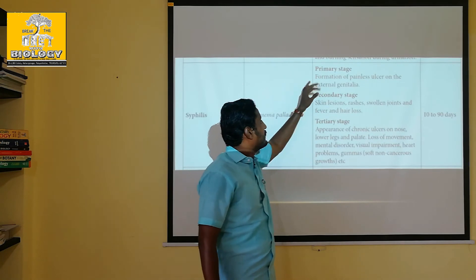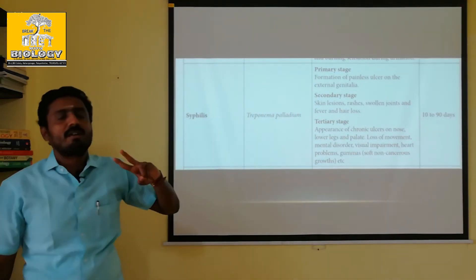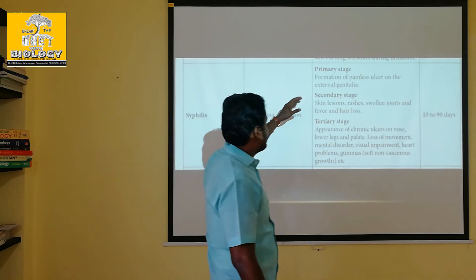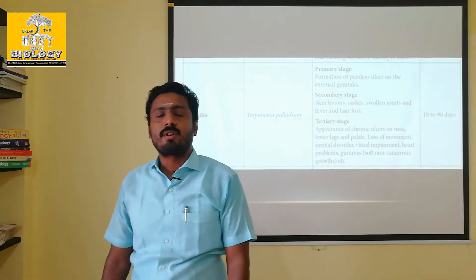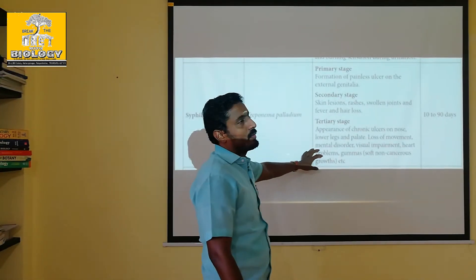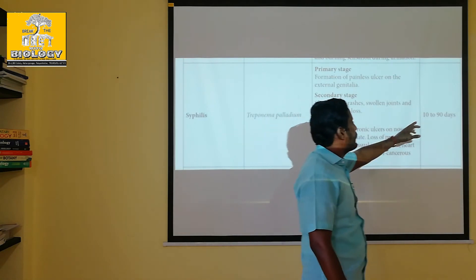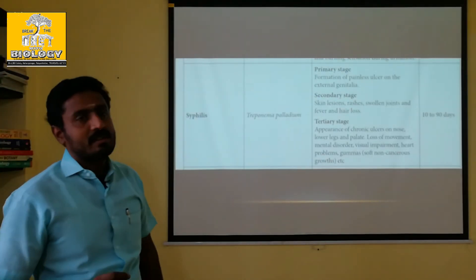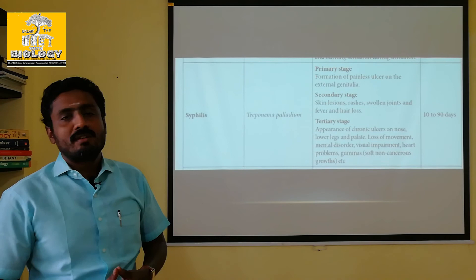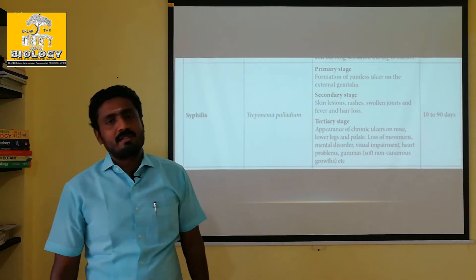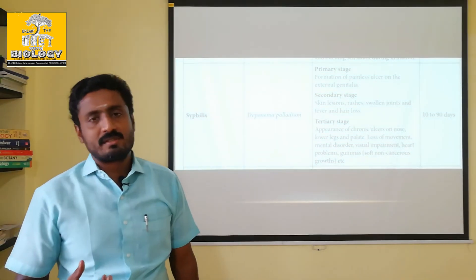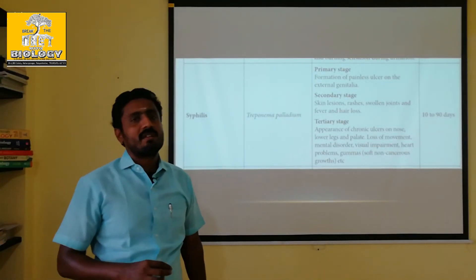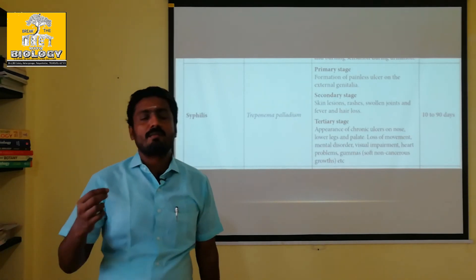If the disease is detected at the starting stage, there are two preventive measures: personal hygiene and self-discipline. Antibiotics will work properly in early stages. If noted at the primary stage, it can be overcome with antibiotics within 10 days. However, if the patient is in the tertiary stage, it will take around 3 to 4 months.